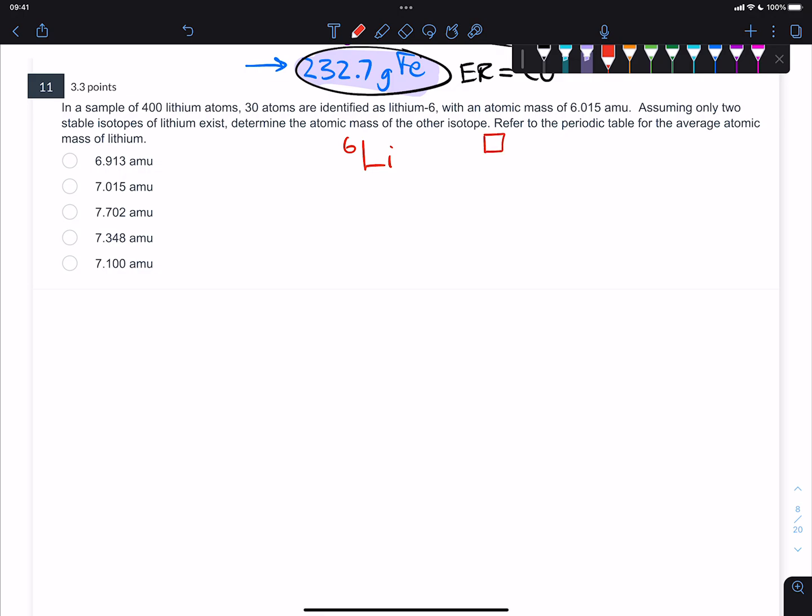You have the lithium-6 isotope and the other lithium isotope. It turns out that the percent abundance of the lithium-6 isotope and the other lithium isotope have to equal 100%. If there are only two lithium isotopes, that means you need to first figure out what is the percent abundance of lithium-6.